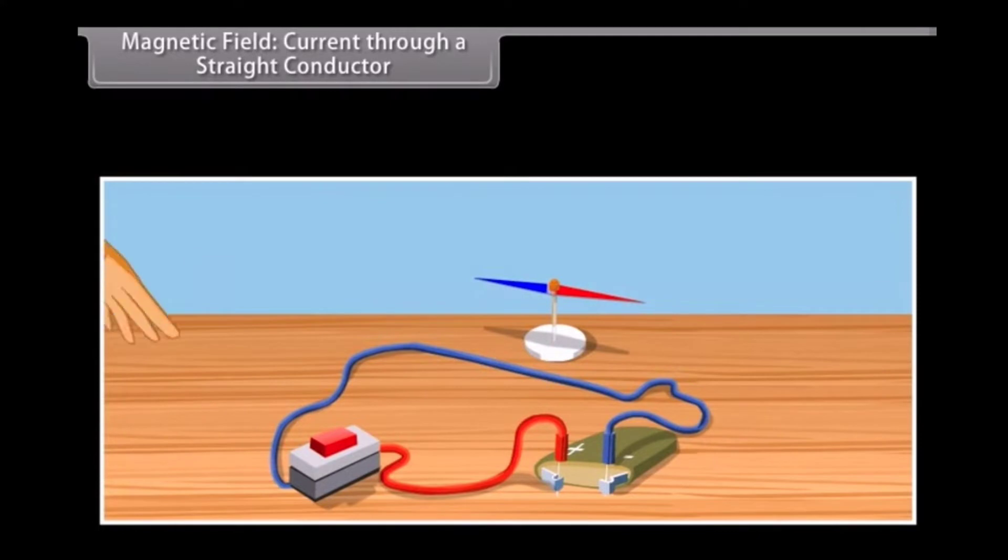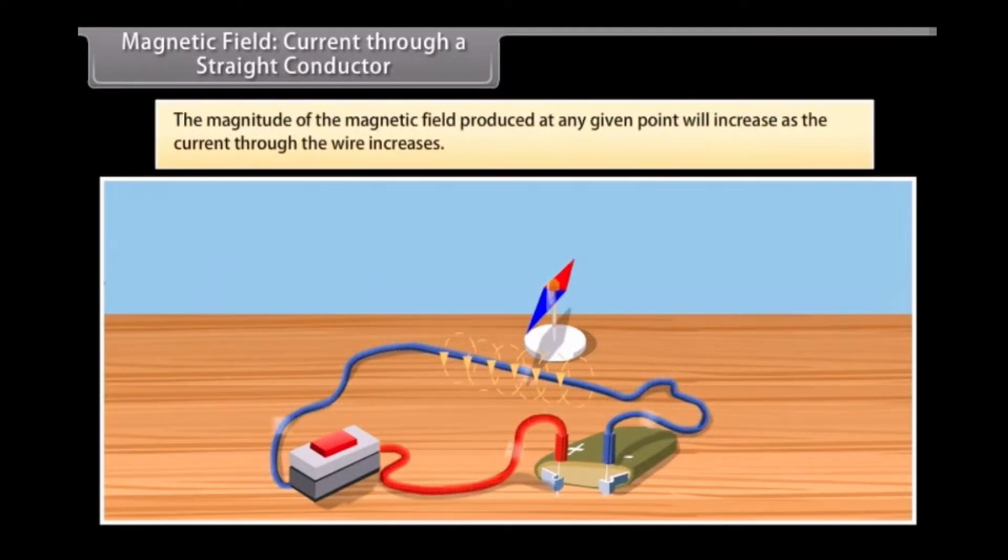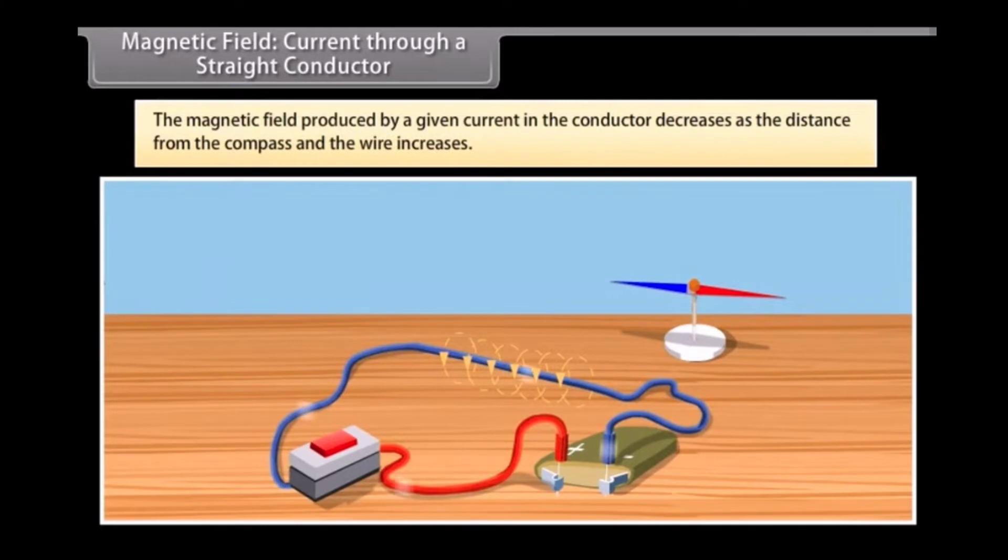Magnetic field current-carrying conductor. As you have seen earlier, let us see what happens when we change the current that is passing through the wire. The effect on the compass also varies. So, if you increase the current, the deflection of the needle of compass will increase. From this we know that the magnitude of the magnetic field produced at any given point will increase as the current through the wire increases. Now, try moving the compass away from the current passing through the wire. You will see that the magnetic field produced by a given current in the conductor decreases as the distance from the compass and the wire increases.